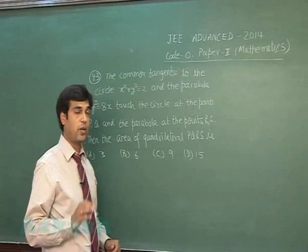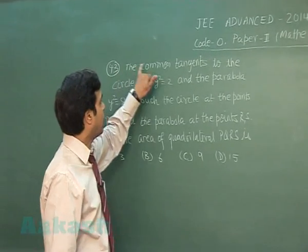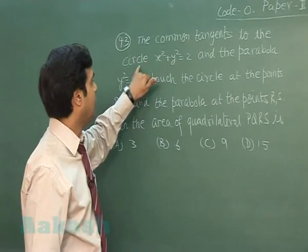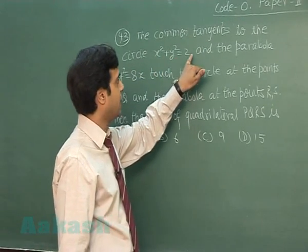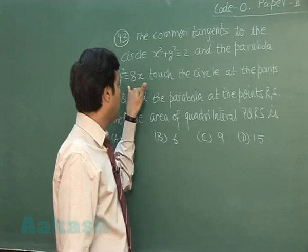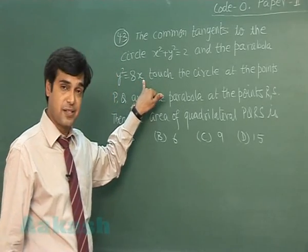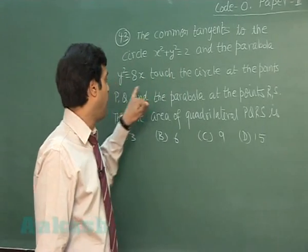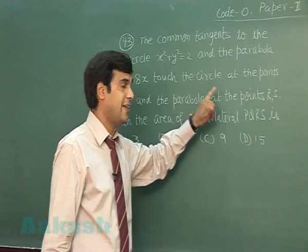Let's go for question number 43. The common tangents to the circle x² + y² = 2 and the parabola y² = 8x touch the circle at the points P, Q and the parabola at the points R and S.